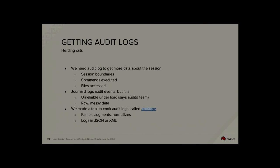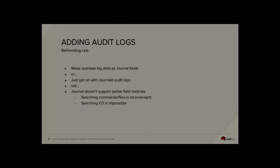We made a tool called O-shape for the enterprise solution. It parses the logs and converts user IDs into usernames, and normalizes the logs by extracting who did what, on which object, what the action was, and what the result was - the normal security log requirements. We log that in JSON or XML. These transformations are done using libauparse which is part of the audit project. The idea is to get these O-shape logs into journal, but the problem is that journal doesn't support partial field matches - you can only match against the full journal field value.